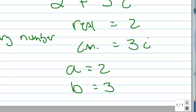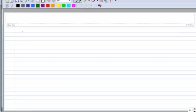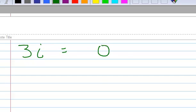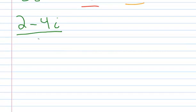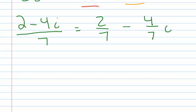Let's do another example. We have 3i. I can rewrite that as 0 plus 3i, because that hasn't changed anything at all. So 0 is the real part and 3i is the imaginary part. Now let's try 2 minus 4i all over 7. I can break this apart into two separate fractions: 2 over 7 minus 4 over 7 times i. So the real part is 2 over 7, and the imaginary part is negative 4 over 7 times i.